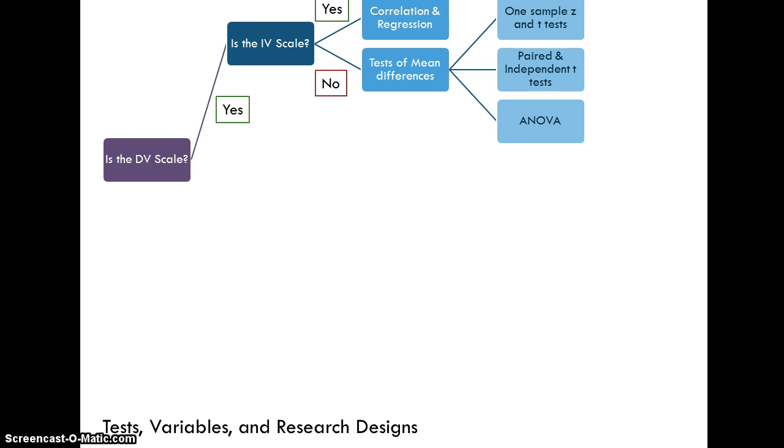And those include the one sample Z and T test, the paired and independent sample T test, and analysis of variance. And remember that the differences here is that we've got known population standard deviation for the Z test, but not for the T.